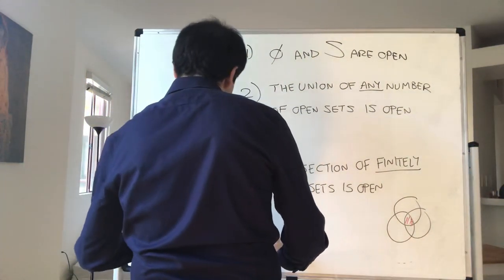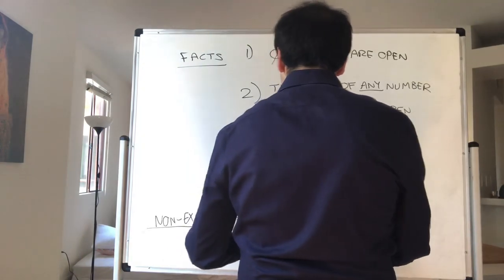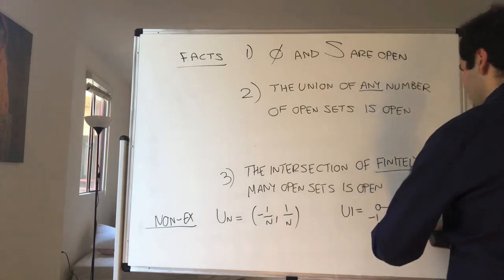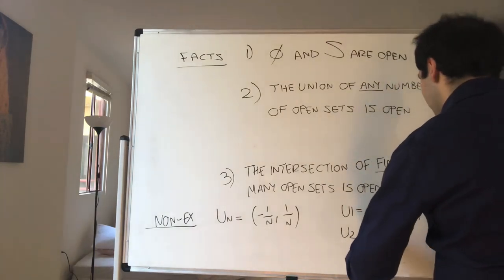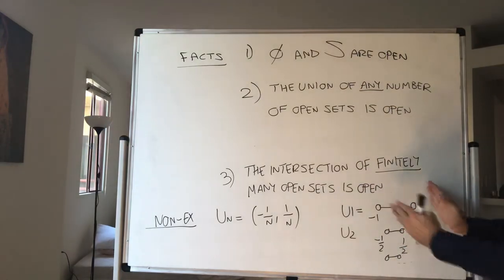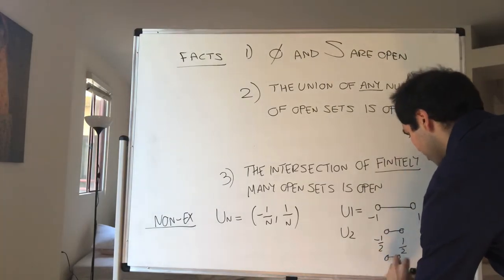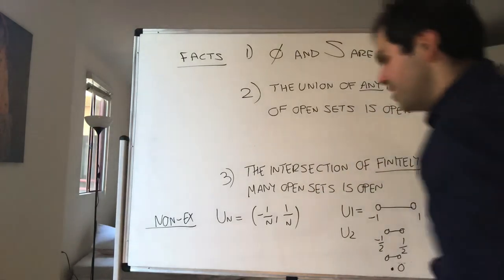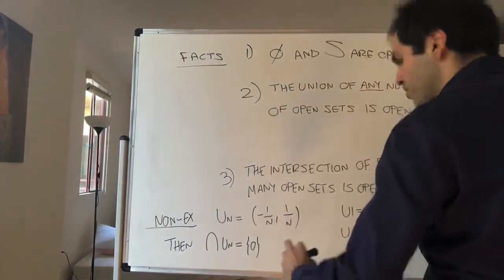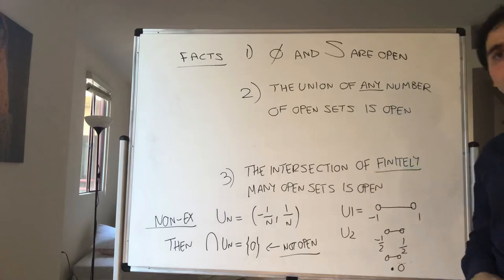Let me give a non-example for infinite intersections. Take U_n to be the open interval (−1/n, 1/n). So U₁ = (−1, 1), U₂ = (−1/2, 1/2), U₃ = (−1/3, 1/3). Those sets converge to zero, so the intersection of all U_n is just {0}. But the set {0} is not open — there's no way to fit a ball in {0}. That's why it's very important to take only finitely many intersections.